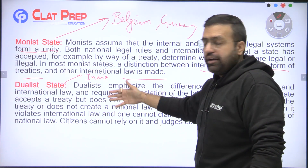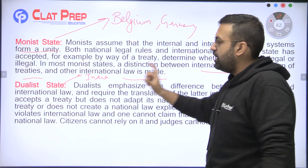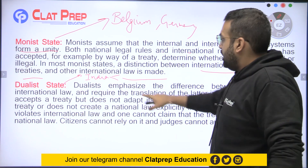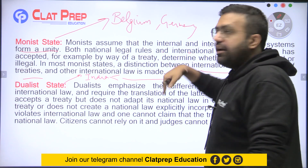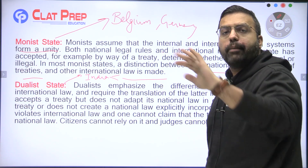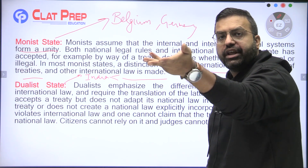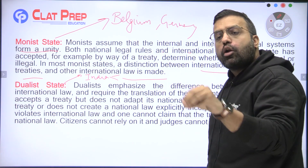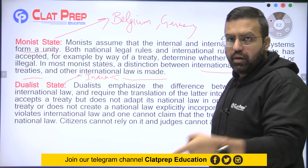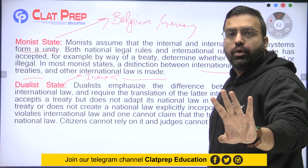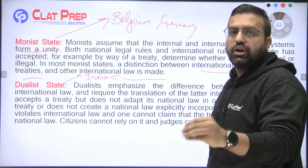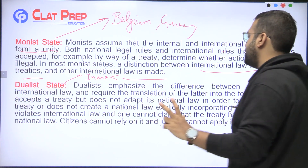Dualist — just like India — emphasizes the difference between national and international law. यानि यहाँ पर national और international law में difference होता है। And it requires the translation of the treaty into the formal national law. उस treaty को local law में incorporate करने के लिए आपको फिर से एक law बनाना पड़ेगा। अगर आपने अपने देश में local law नहीं बनाया, तो वो treaty local law के अंदर incorporate नहीं हो सकती — यही है एक dualist state की characteristic।